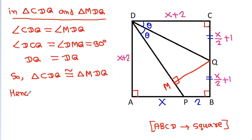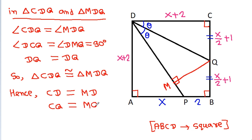Hence, CD is equal to MD, which is X plus 2, and CQ is equal to MQ, which is X/2 plus 1.